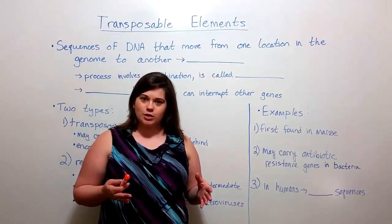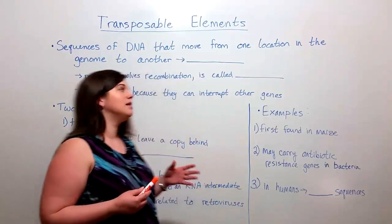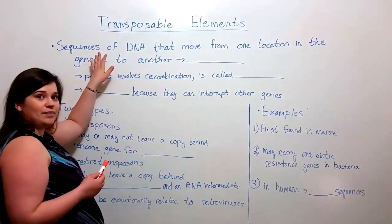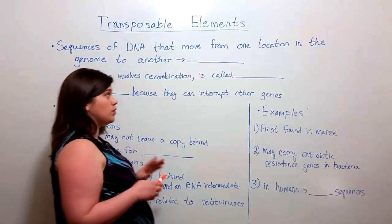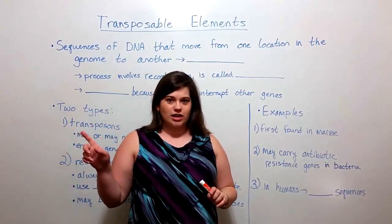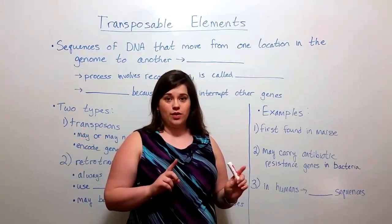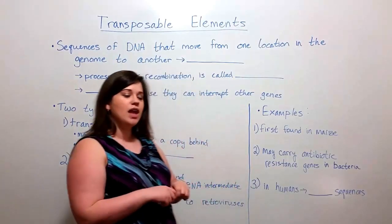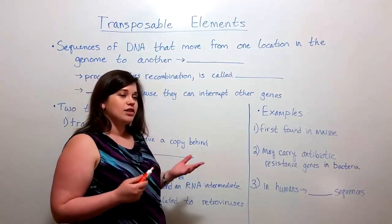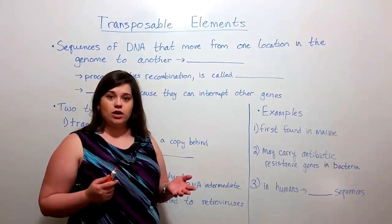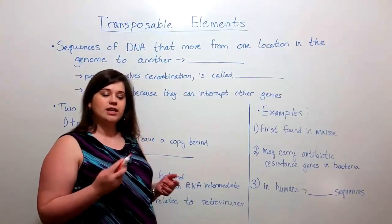So what are transposable elements? Specifically they are sequences of DNA that can actually move from one location in the genome to another location in the genome. And because they can do that, move around in the genome, they have this special name that you may have heard of: jumping genes.